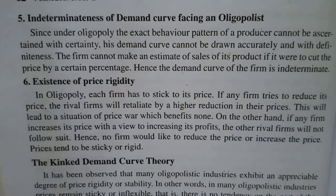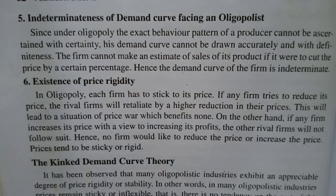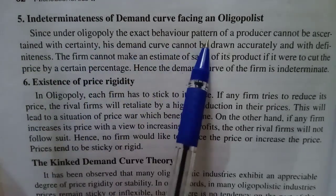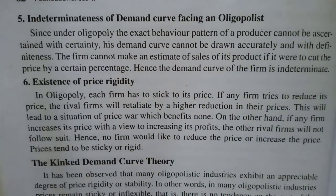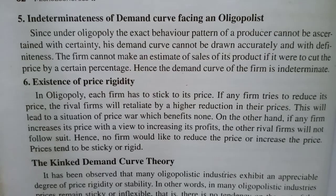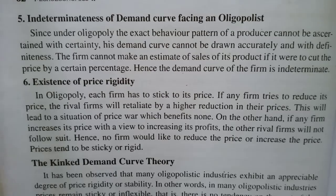The fifth feature is indeterminateness of demand. In oligopoly, the exact behaviour pattern of a producer cannot be ascertained with certainty. His demand curve cannot be drawn accurately. The firm cannot make an estimate of sales of its product if it were to cut the price by a certain percentage. Hence, the demand curve of the firm is indeterminate.